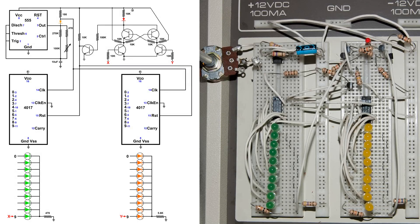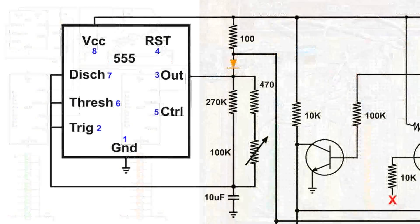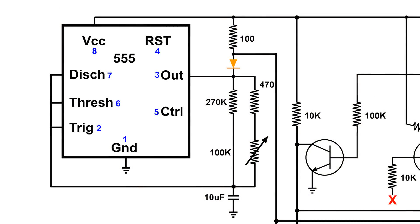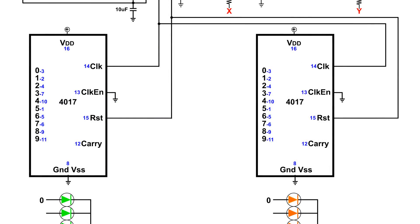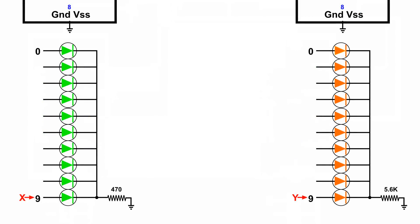What it consists of is a 555 timer that clocks both of these decade counters, the 4017. Below those I have the diodes, mainly just to see what's going on. And if you look down at the bottom, you'll see an X and a Y.